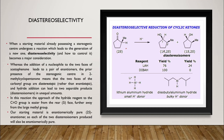When a starting material already possessing a stereogenic center undergoes a reaction that leads to the generation of a new one, diastereoselectivity becomes a major concern. The addition of a nucleophile to the two faces of acetophenone leads to a pair of enantiomers, whereas the prior presence of a stereogenic center in 2-methylcyclopentanone means that the two faces of the carbonyl carbon are diastereotopic, and hydride addition can lead to two separable products in unequal amounts.